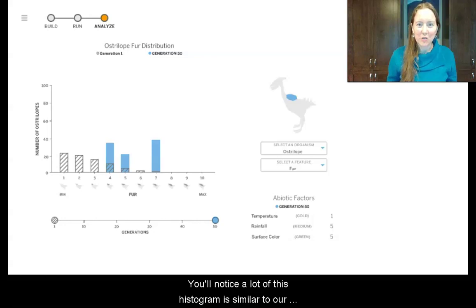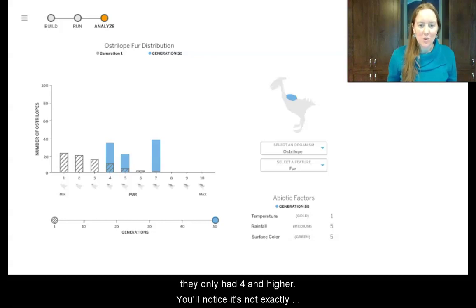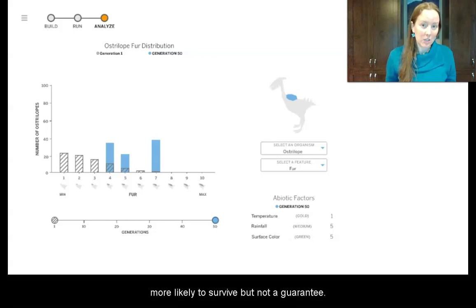You'll notice a lot of this histogram is similar to our warm up histogram. At generation 1, we had variation all the way from 1 to 7. But by generation 50, we only had 4 and higher. You'll notice it's not exactly the same because we don't have any fur level 6. Again, having these traits means that it's more likely to survive, but not a guarantee of survival.